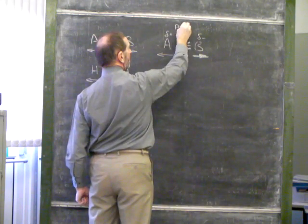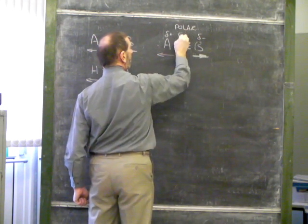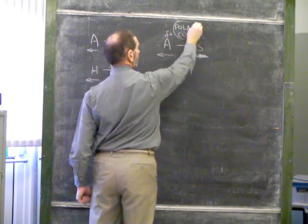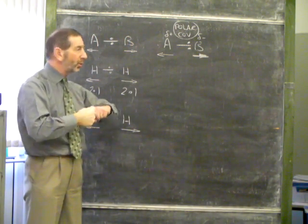The bond is said to be polar. Polar covalent. Why covalent? We're still sharing electrons, but not evenly.